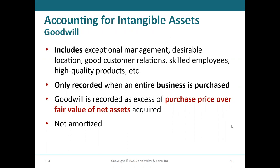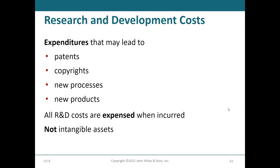Goodwill is only recorded when you purchase a business. It's the difference between the total price paid for the business and the value of all the assets purchased — whether tangible or intangible. You record that difference as a goodwill asset, and it just sits there unless it is deemed to have been impaired. Impairment of goodwill is an intermediate accounting topic.